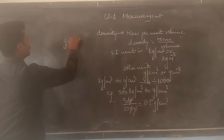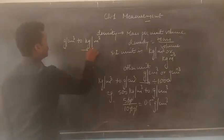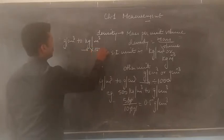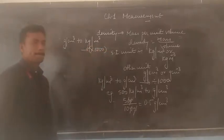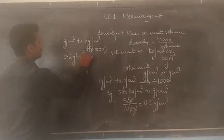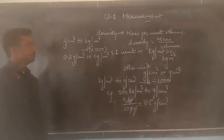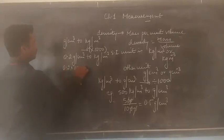The same way, we can also convert gram per centimeter cube to kg per meter cube. To convert gram per centimeter cube to kg per meter cube, we need to multiply by 1,000. Suppose we want to convert 0.2 gram per centimeter cube to kg per meter cube. In this case, 0.2 should be multiplied by 1,000.